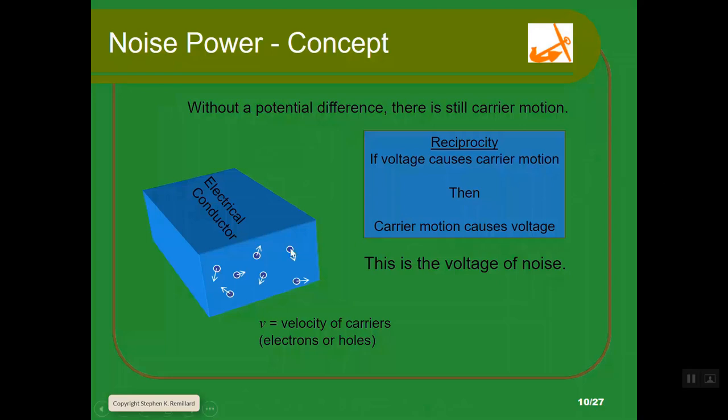Does that mean voltage goes away? Now you have charge carriers bouncing around this electrical conductor not being pushed by an external voltage. This is where I make what I call the reciprocity argument. If voltage causes carrier motion, then carrier motion causes voltage. Even though no voltage is being applied, the carriers are moving around, and as a carrier moves, it generates a voltage. Every carrier is making a little bit of voltage. You'd say all those voltages will cancel because the direction is random, but it's not the voltage that we measure.